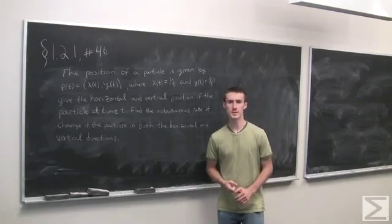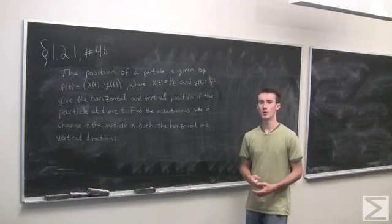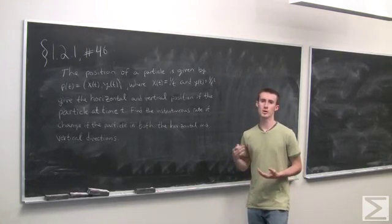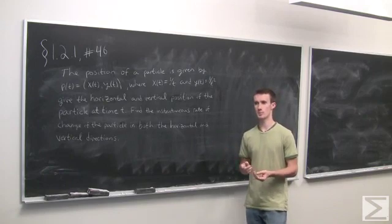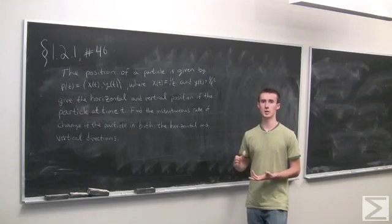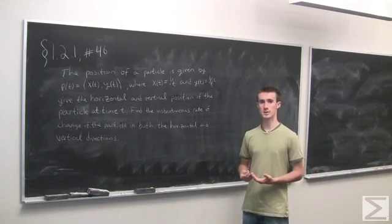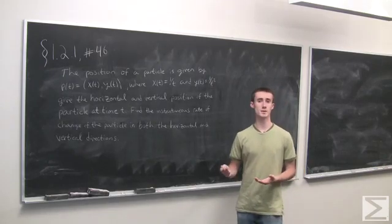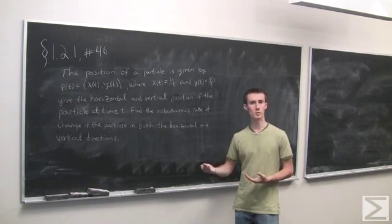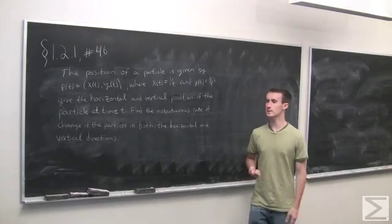In problem number 46 of section 1.1.1, or 1.2.1, we're given a physics problem where we have the position of a particle given by some function, except rather than just position along a single axis, we're given position in two dimensional space. This is done using coordinate functions — one function describing its x position and one describing its y position, meaning the horizontal and vertical axes.